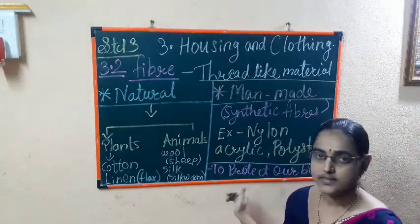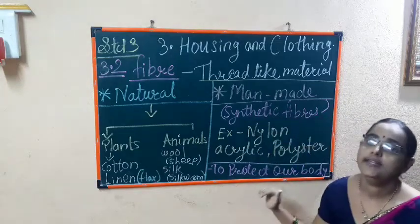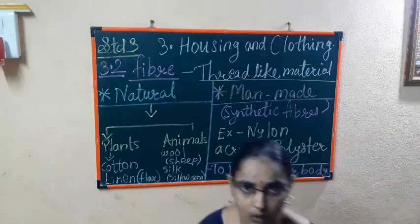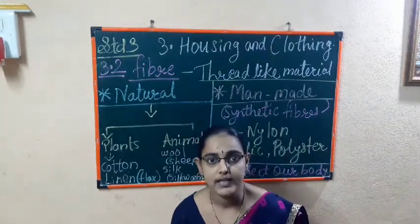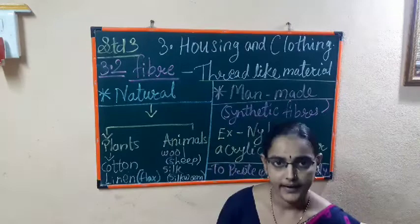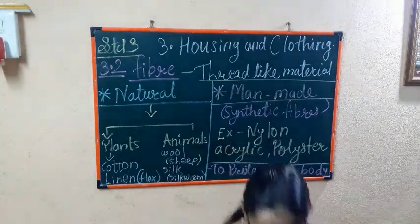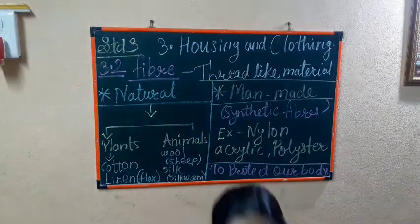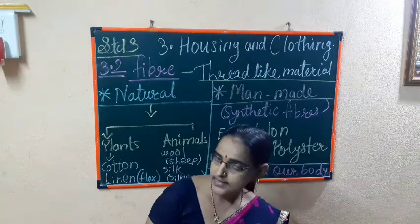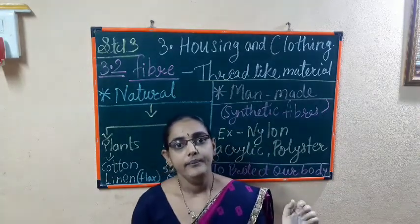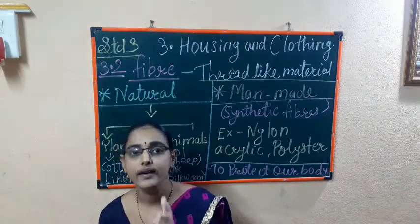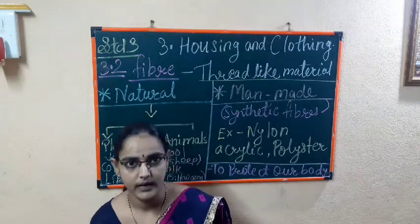We wear different kinds of clothes in different seasons. In summer season, we wear cotton clothes. In rainy season, we use waterproof clothes which give protection from rain. In winter season, we wear woolen clothes. So there are different seasons and we wear different kinds of clothes to protect our body.